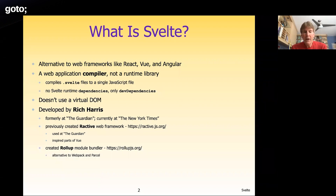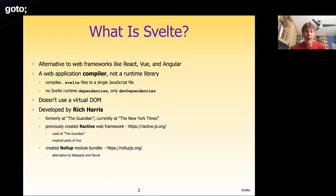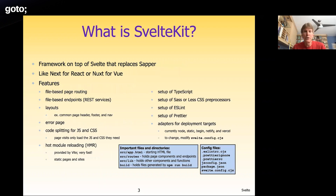Rich Harris used to work at The Guardian and now works at The New York Times. He has quite a lot of experience creating open source libraries. He created the Ractive framework, which is still in use at The Guardian, and he also created the Rollup module bundler.